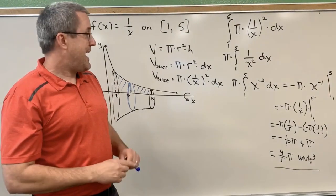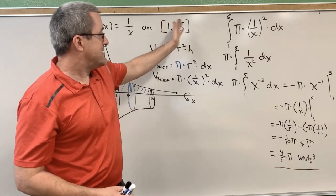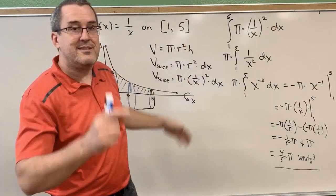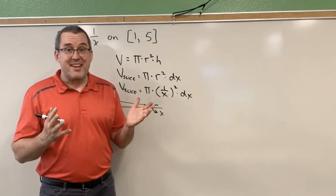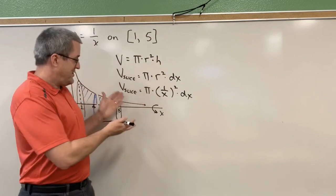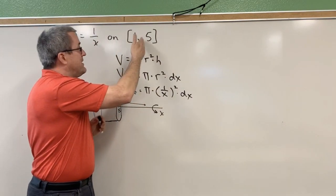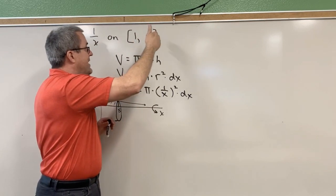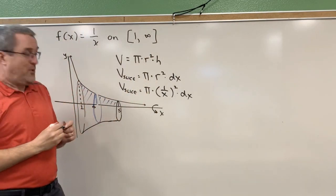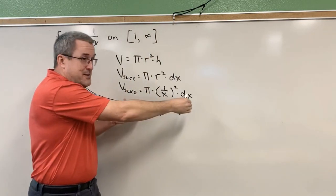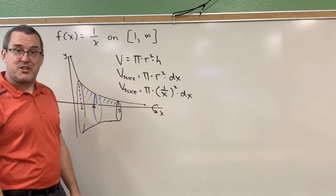Now we're going to explore what happens if instead of going from 1 to 5, we went from 1 to 6, 1 to 7, 1 to 8, 1 to a million, 1 to a billion, 1 to infinity. What if we allowed this tree trunk to be infinitely long and we were asked to find the volume of such an object?